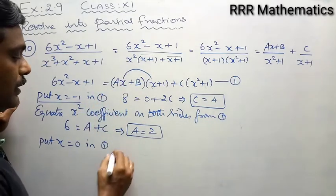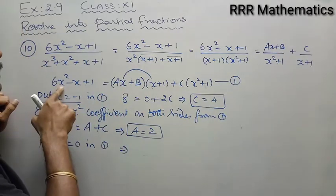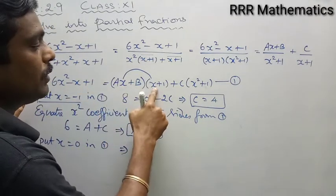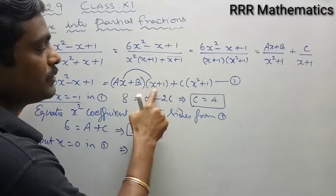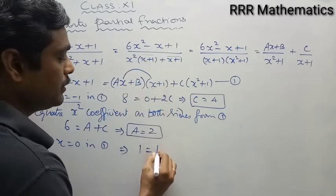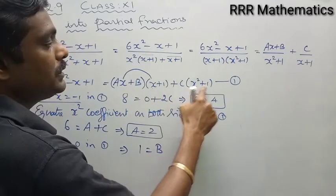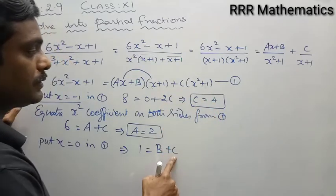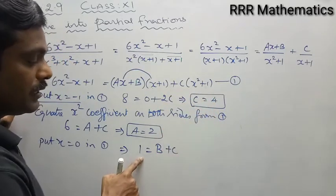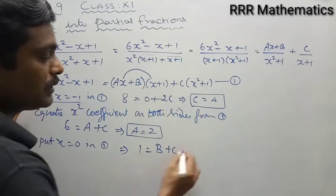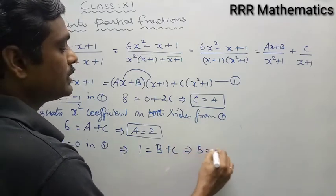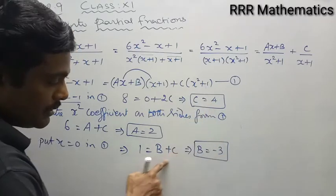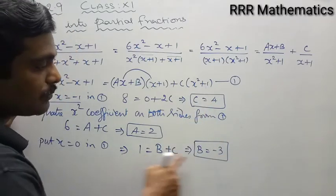To find b, put x = 0 in equation 1. On the left: 1 remains. On the right: (a·0 + b)(0+1) + c(0+1) = b·1 + c·1 = b + c. So 1 = b + c. Since c = 4: 1 = b + 4, which gives b = 1 - 4 = -3.